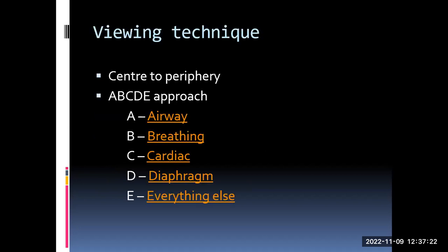There are certain viewing techniques. Some people like to weave because there are so many structures in a chest X-ray and you have to try not to miss anything. Certain people like to weave from centre towards periphery, so that you have your own checklist and you keep on ticking them off.